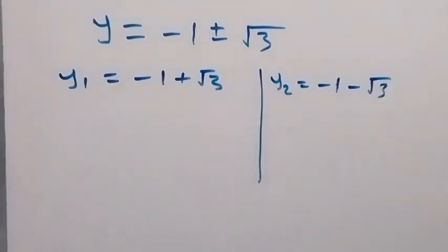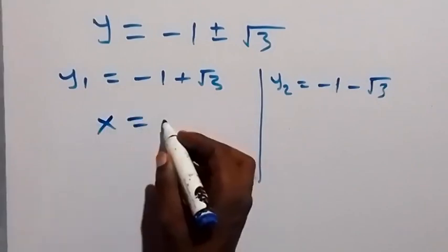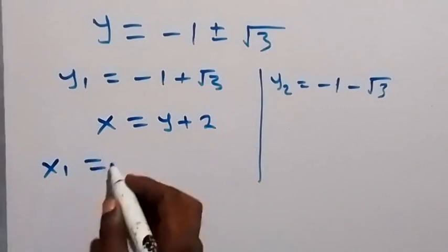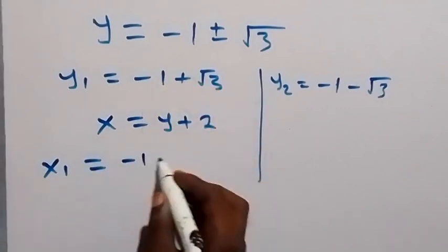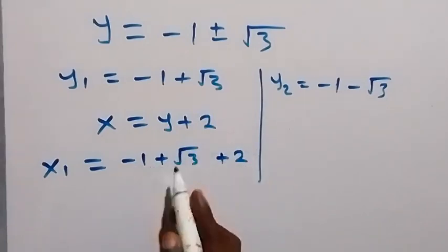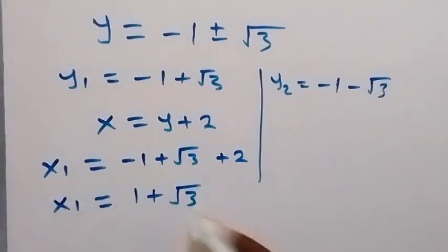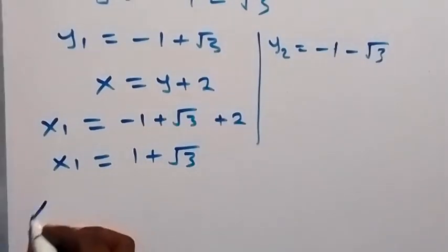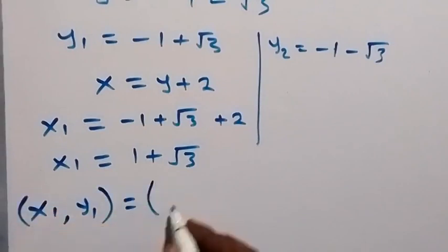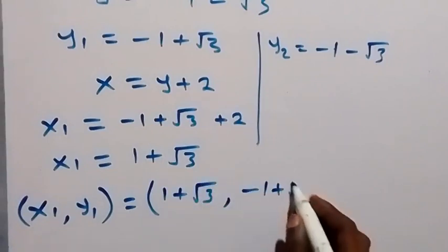We can get the corresponding values of x from the relation we used. From equation 1 we have x equals to y plus 2. For x1, that will be y1 plus 2, which is minus 1 plus root 3 plus 2. So 2 minus 1 gives 1, meaning x1 equals to 1 plus root 3. The first solution set, x1 comma y1, is therefore 1 plus root 3, comma, minus 1 plus root 3.